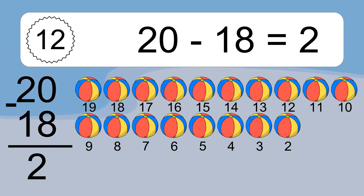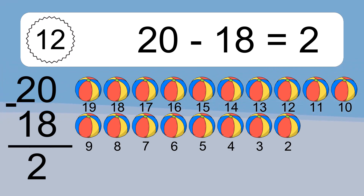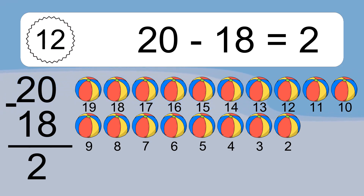Let's count it: 19, 18, 17, 16, 15, 14, 13, 12, 11, 10, 9, 8, 7, 6, 5, 4, 3, 2.